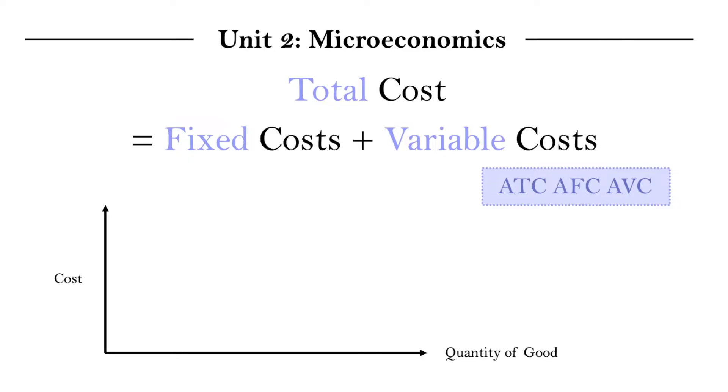So, let's have the x-axis as the quantity of a good, and the y-axis as the cost. And let's think about how each cost would change as the quantity of goods increase.